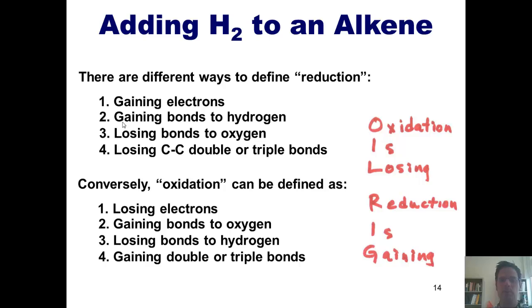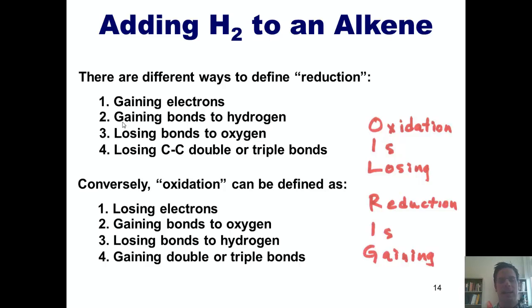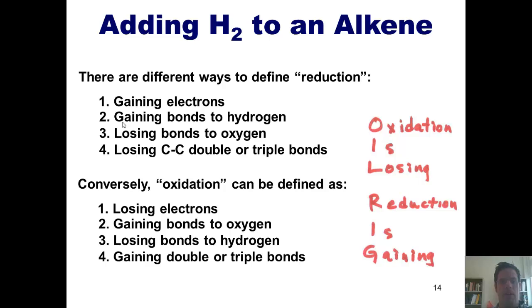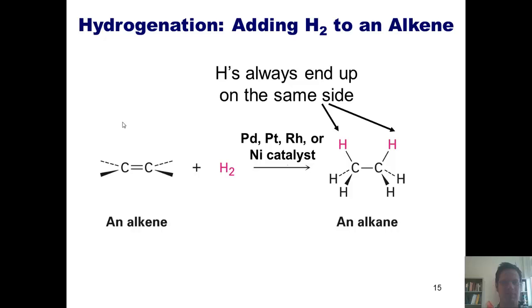In contrast, the opposites would be oxidations. If I have a reactant that, in a process, gains bonds to oxygen, loses bonds to hydrogen, and gains double or triple bonds going from the left side of the reaction to the right, I can say, very simply, that that is usually an oxidation. Now, you might wonder, why in the world am I wasting your time telling you this? Well, it'll become pretty clear in the next slide.